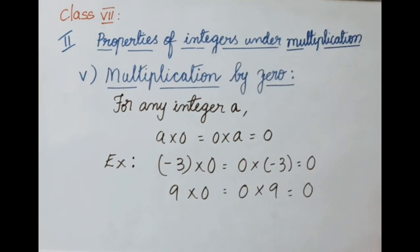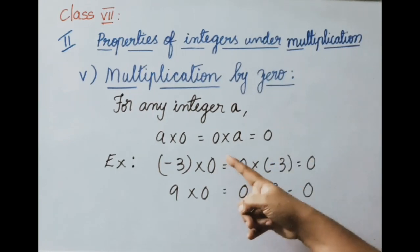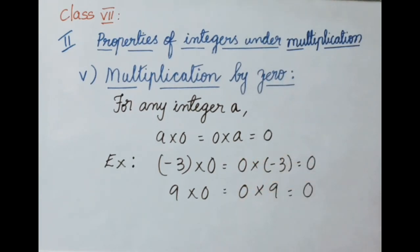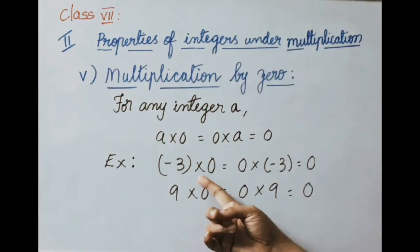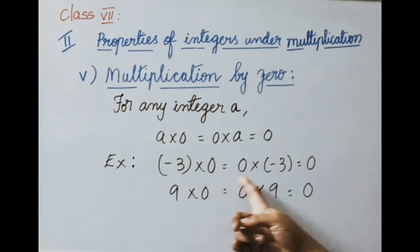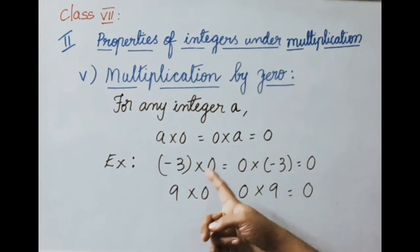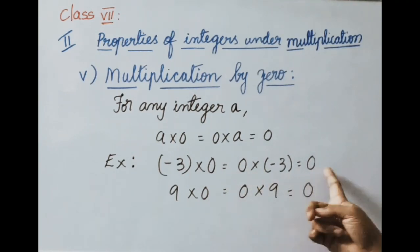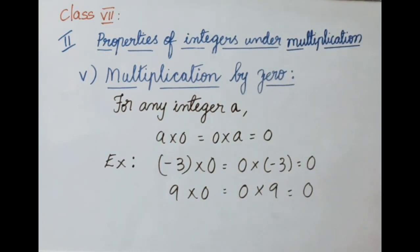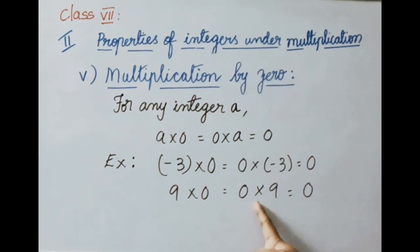Multiplication by 0: for any integer A, A into 0 equals 0 into A equals 0. If any integer is multiplied by 0, we get answer 0. Example: minus 3 into 0, or 0 into minus 3, gives 0. And positive integer 9 into 0, or 0 into 9, also gives 0.